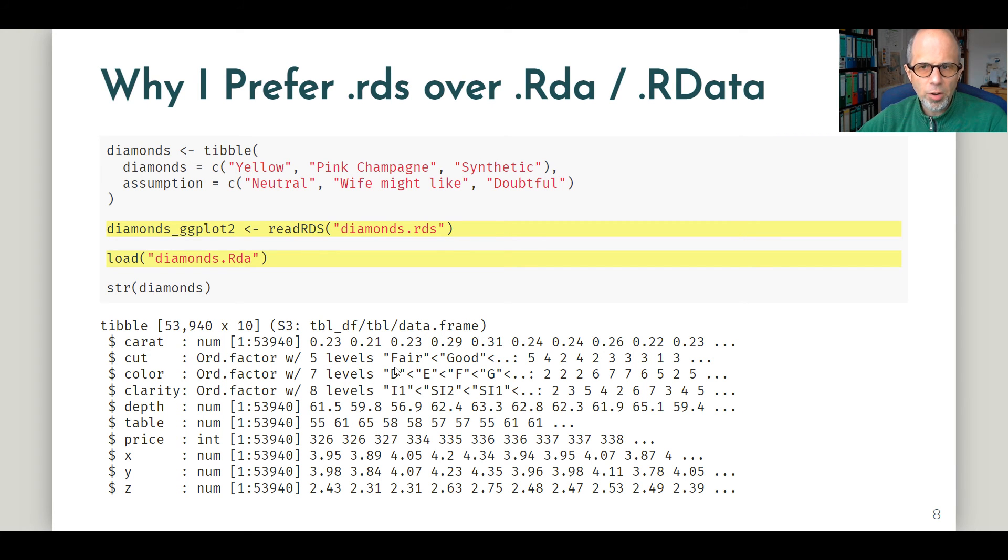Let's look carefully at what is happening here. Why do I prefer the RDS format over .rda and .rdata? When I first started using R, I started using .rda to store my files but I wouldn't recommend that anymore. Here's what can go wrong. I create a little dataset that I call diamonds. I'm just musing which type of diamonds my wife could like. So I have three types of diamonds and an assumption whether my wife could like this diamond or not. And then I read in the diamonds dataset that I stored before in the RDS format and I can give it a custom object name because readRDS takes an assignment. I assign it to diamonds_ggplot2 to differentiate it from my diamonds dataset that I created above.